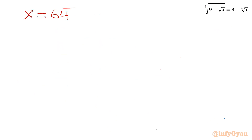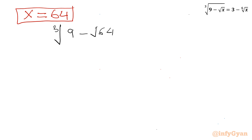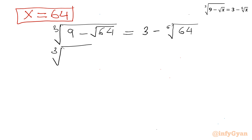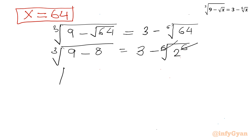Let us check x equal to 64. Applying x equal to 64: LHS is cube root of (9 minus square root 64) equals cube root of (9 minus 8) equals cube root of 1 equals 1. RHS is 3 minus 6th root of 64. Since 64 equals 2 to the power 6, the 6th root of 64 equals 2, so RHS equals 3 minus 2 equals 1. LHS equals RHS, hence this is also verified.